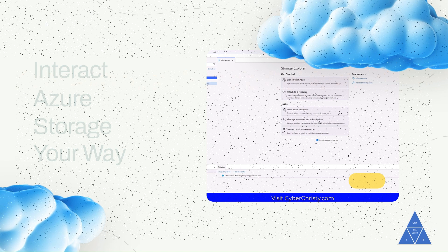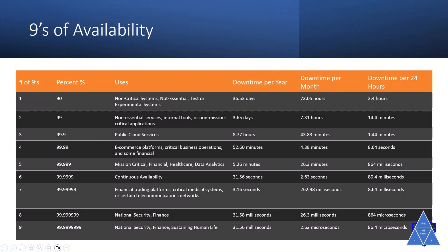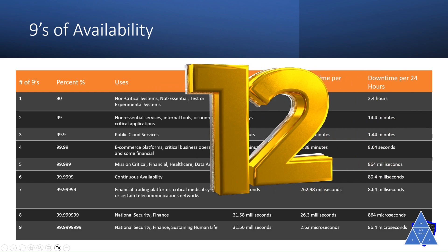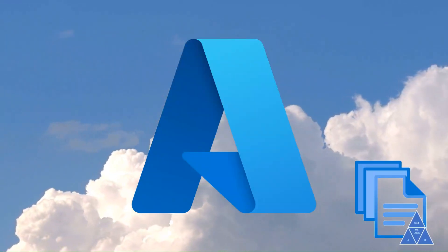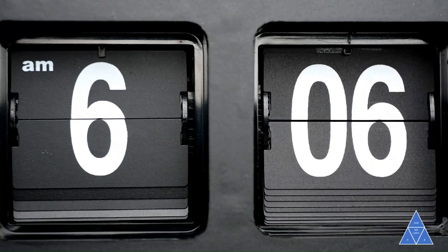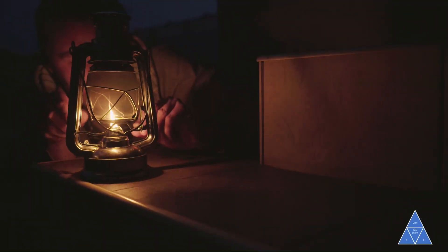Resiliency: Azure Files have been built from the ground up and starts at 99.99% availability, with options to increase availability to 12 nines of availability. Replacing on-premise file shares with Azure Files means you don't have to wake up in the middle of the night to deal with local power outages or network issues.